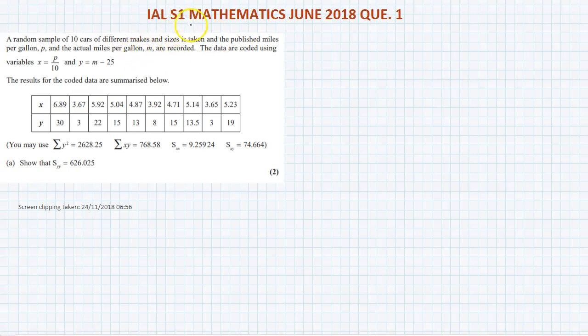This is ILS 1 mathematics June 2018 question number one. A random sample of 10 cars of different makes and sizes is taken and published miles per gallon p and the actual miles per gallon m are recorded. The data are coded using the variable x that is p over 10 and y that is m minus 25.